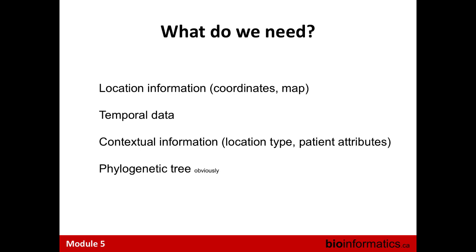You also need some temporal data — this is often when you actually sampled the individual and got an isolate from them. This can be very complex because you don't know how long somebody's been sick or at what stage they're at, and this will vary for different diseases. You can think of something like HCV or hepatitis, which can have a lot of in-host diversity and you're seeing it only at one point in time. You also need contextual information or different settings — location attributes, information about the patient, socioeconomic factors, or different kinds of environmental data from biological sensors or even weather and meteorological information.